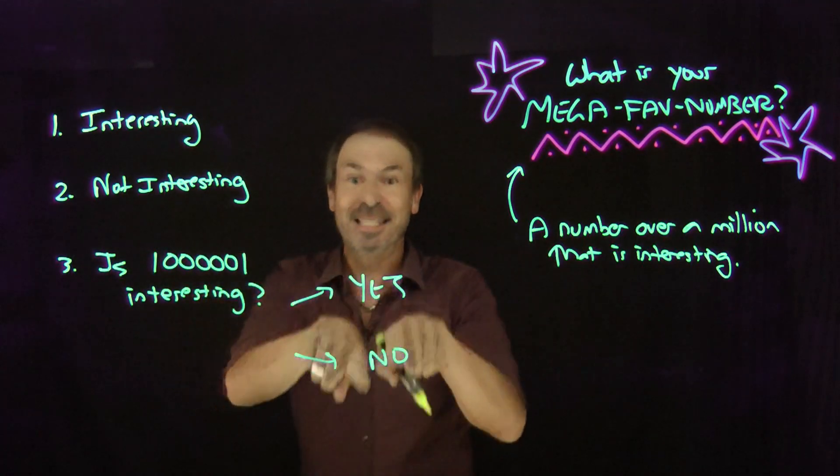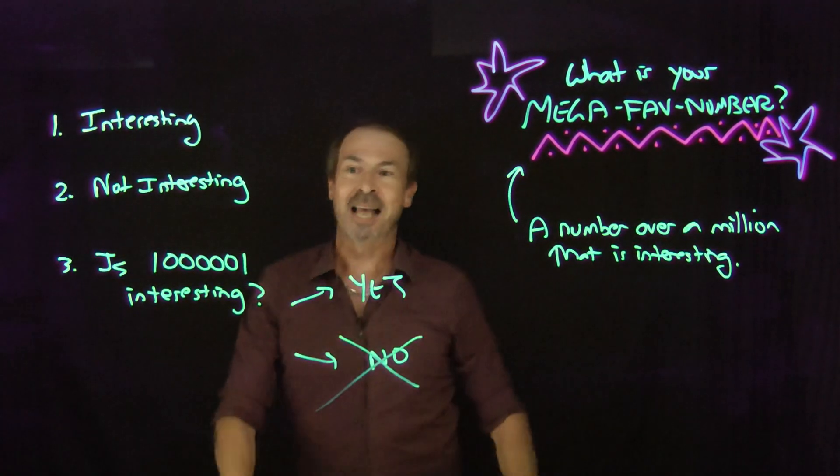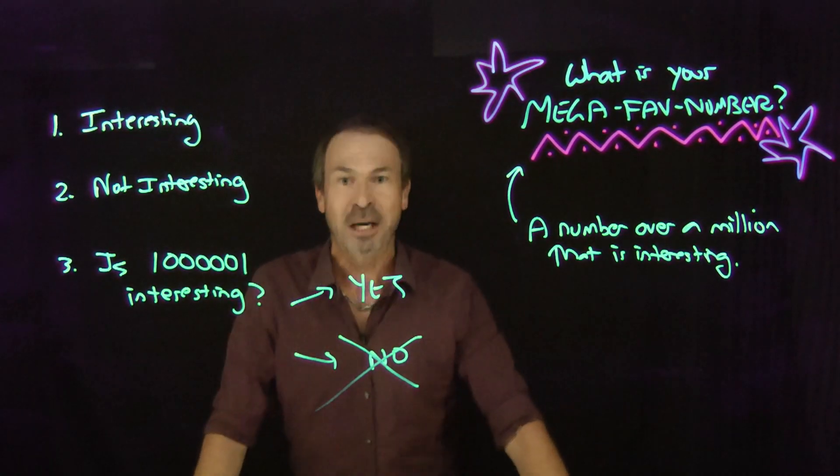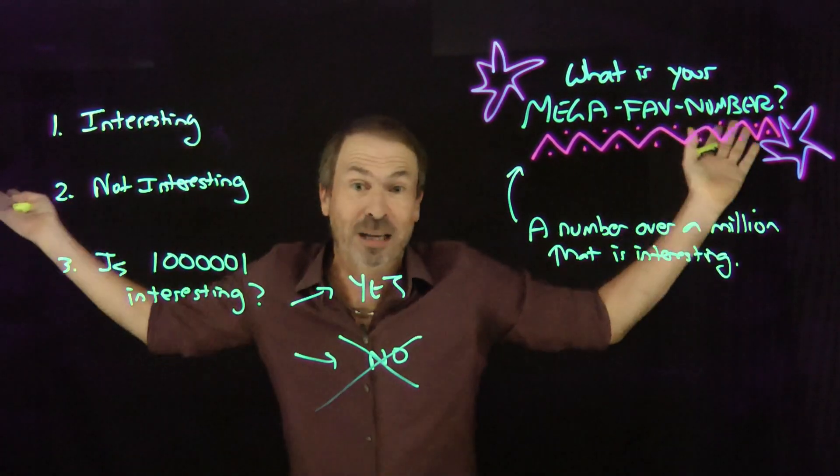Contradiction. If it's not interesting, it's interesting. So this is a contradiction. The answer to this question can't be no. So by default, a million and one is interesting. And I don't know why. I don't know what makes it interesting, but it is.